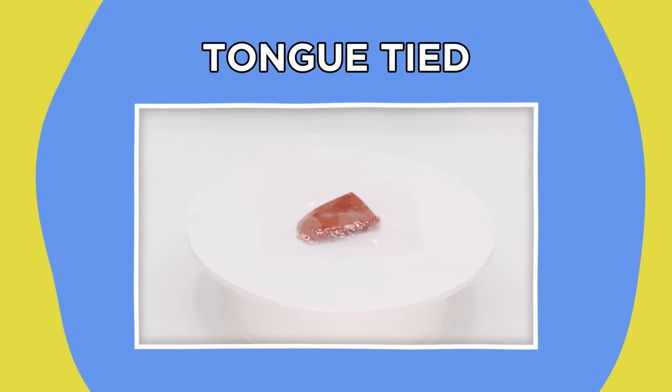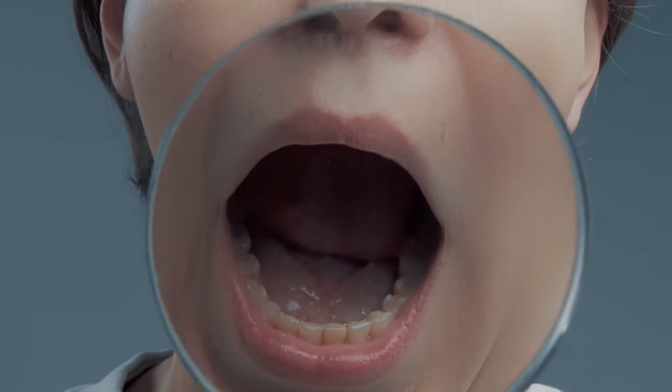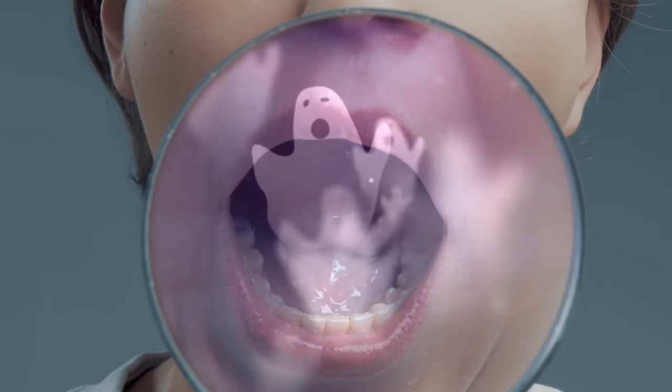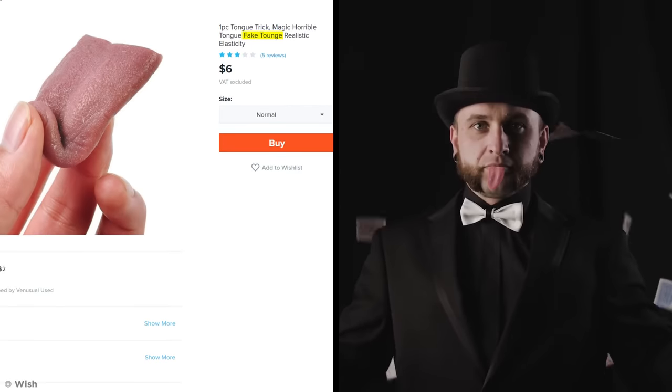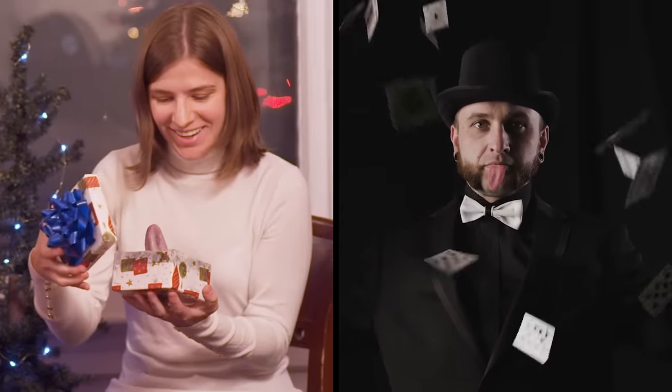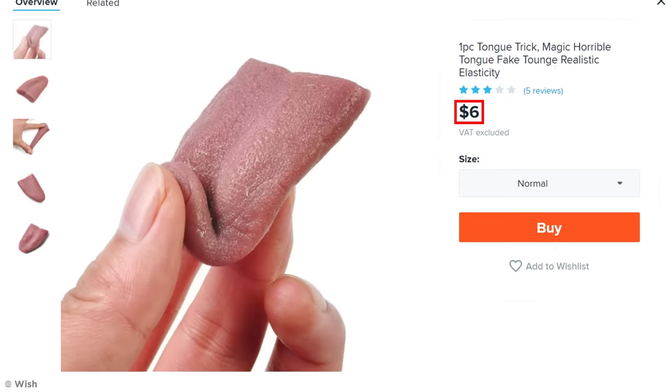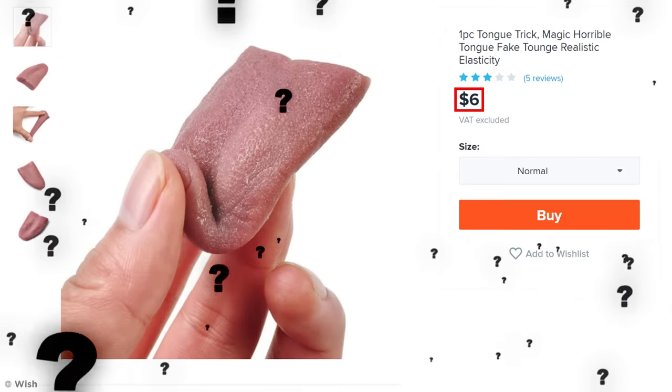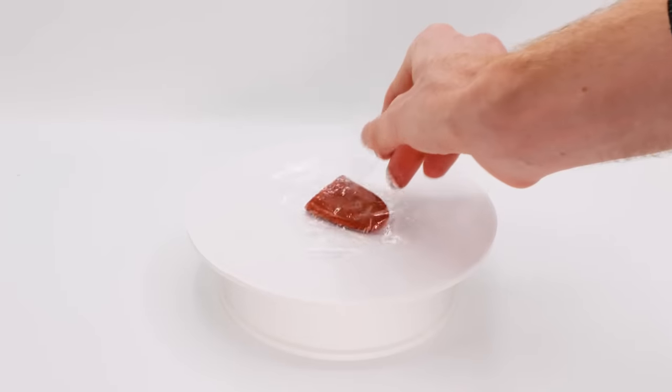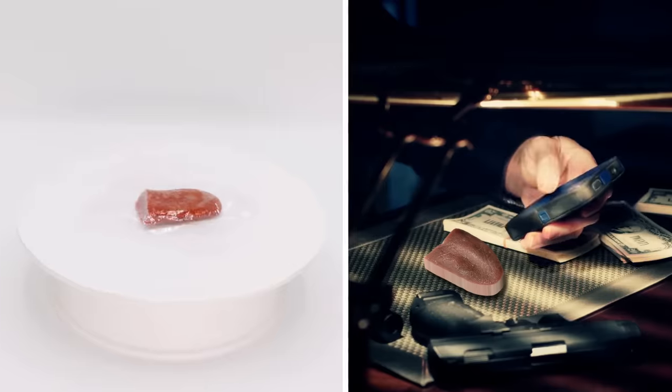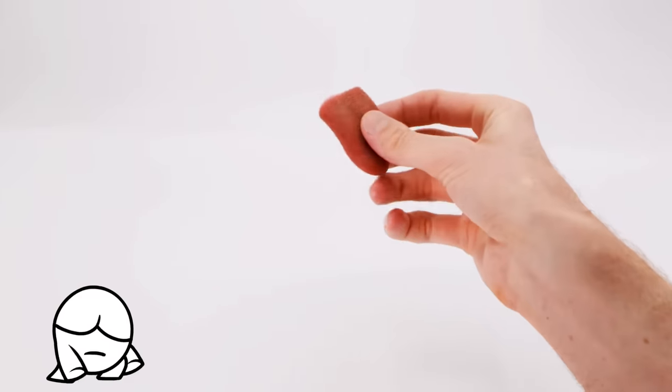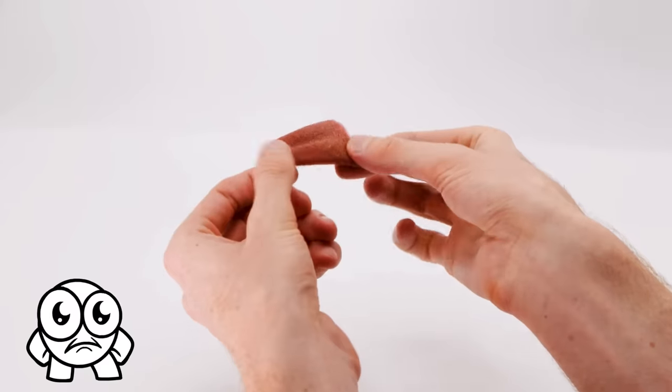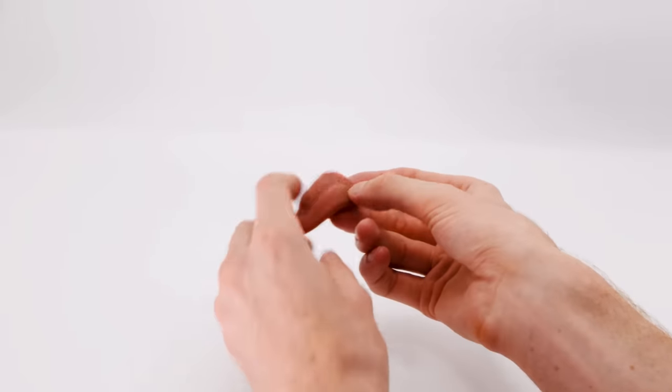Tongue Tied. Because the teeth weren't horrifying enough, I decided to scar myself further by searching up other mouth horrors, and found this. Yep, it's a fake tongue. Perfect for magic tricks and practical jokes, apparently. But at just six dollars, how realistic will this Wish one look? To find out, I bought one, and it arrived like this. Bleh. Looks more like a mafia threat than a product. Once I got it out of the packaging, it did look pretty realistic. It was super elastic, just as promised, and did, for all intents and purposes, look like a real tongue.